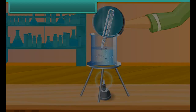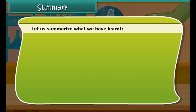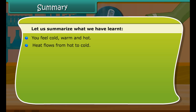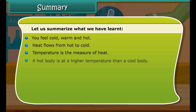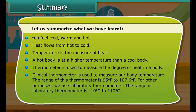Let us now measure the temperature of hot water kept in a beaker. Take a laboratory thermometer and immerse the bulb of the thermometer in hot water. See the shining thread of mercury moving up in the thermometer tube. After some time, the mercury thread will stop rising and stand at one place. Read the temperature on the thermometer tube which corresponds to the top of the mercury thread — this is the temperature of the hot water.